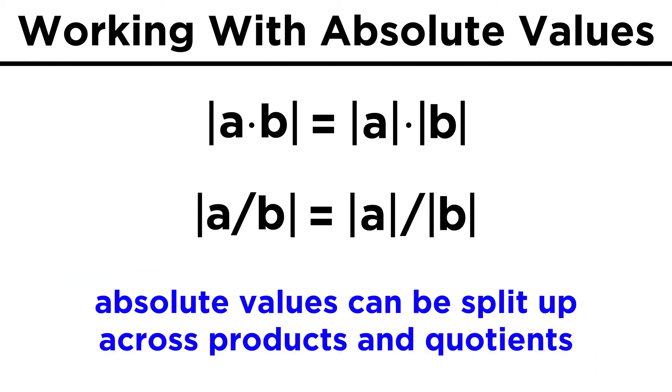Absolute values obey properties just like other operations, so we can see that the absolute value of ab can be split up into the product of two absolute values, and the same goes for division.